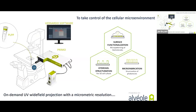Now that I have shown how to project on-demand UV patterns with PRIMO, I will show how to use this light to take control of the cellular microenvironment. There are three main families of applications: surface functionalization, also known as micropatterning of biomolecules; hydrogel structuration for 3D cell culture; and microfabrication, or the structuration of UV-sensitive photoresists.